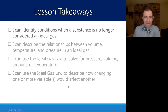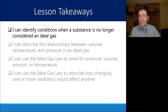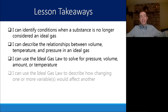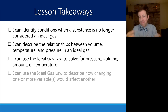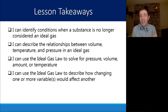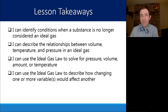The takeaways of this lesson: you should be able to identify conditions when a substance is no longer considered an ideal gas; describe the relationships between volume, temperature, and pressure in an ideal gas; use the ideal gas law to solve for pressure, volume, and temperature — plug and chug to solve for a given unknown; and when changing one variable affects the others, figure out what remains the same, set up your equation accordingly, and create a before-and-after equation that always equals the same constant to find the unknown at a final condition.